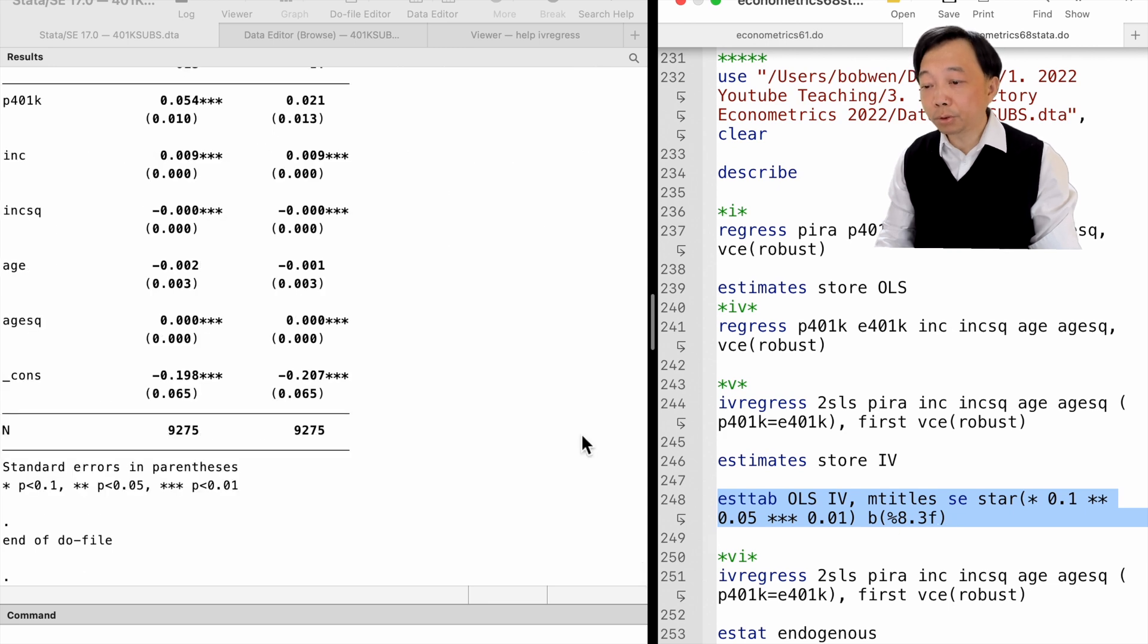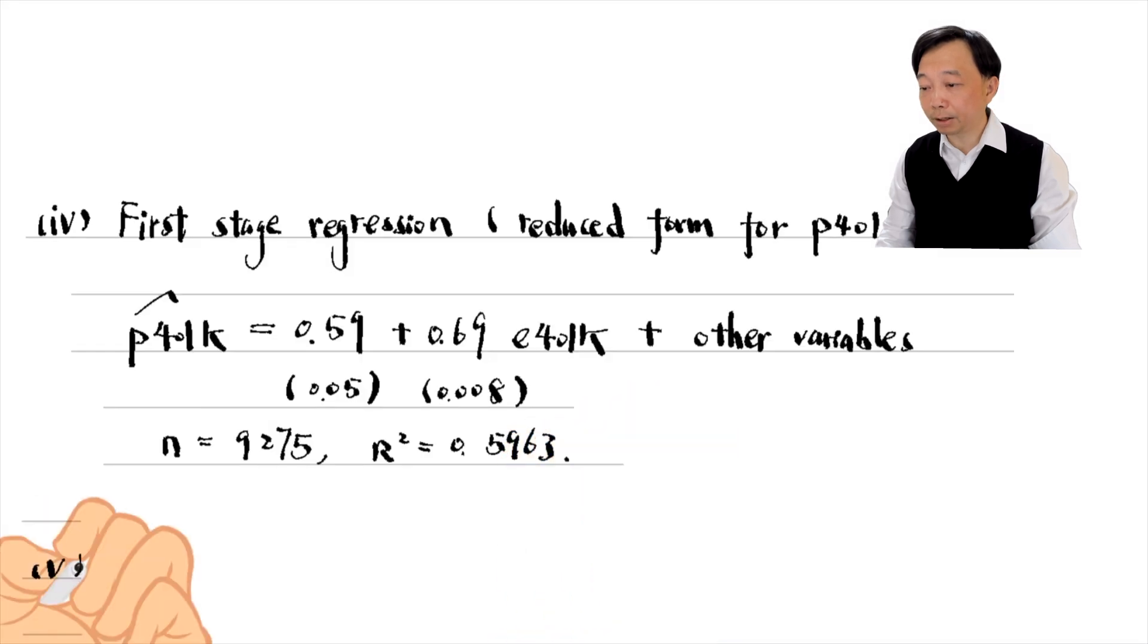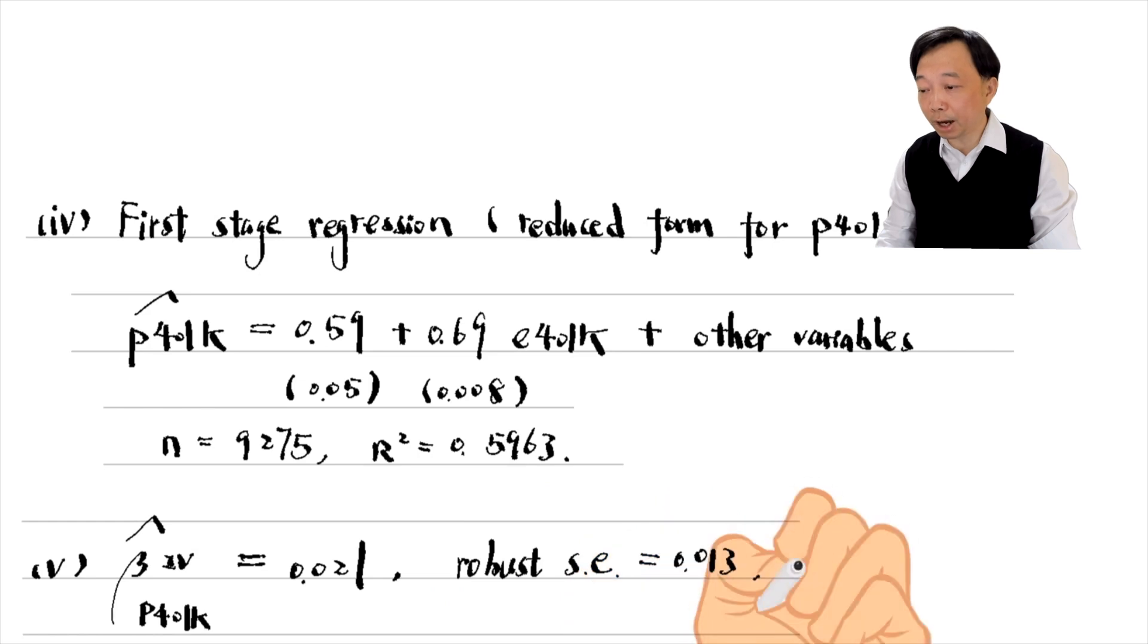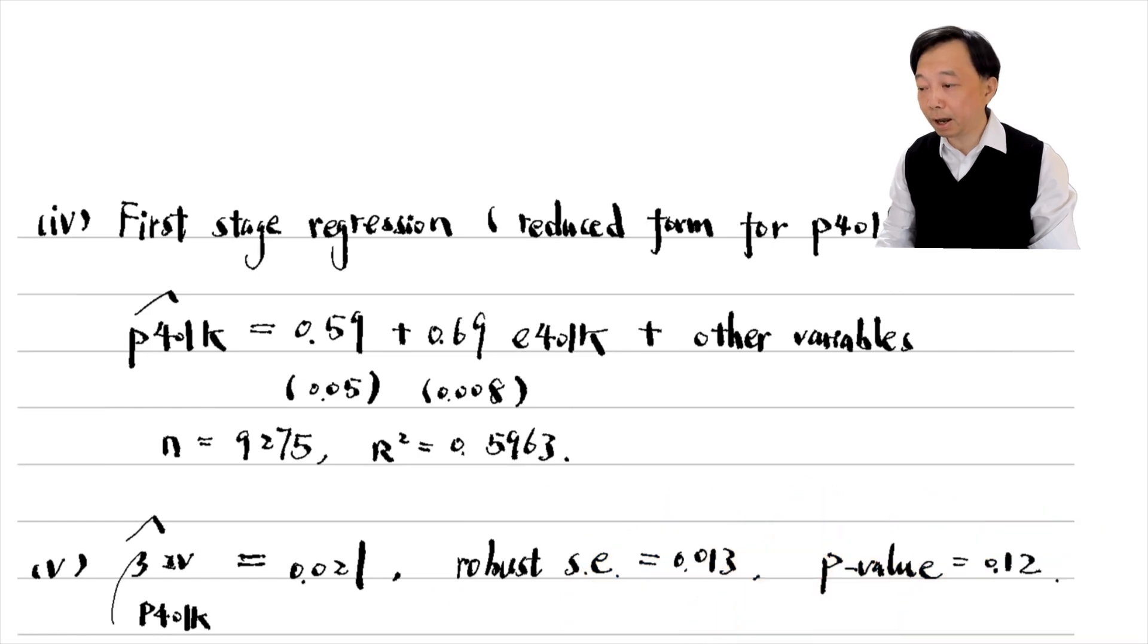The two-stage least squares estimate of beta 1 is 0.021, less than half of the OLS estimate. It is statistically insignificant at the 10% level against a two-sided alternative with a p-value of 0.12. The estimate is positive and insignificant, suggesting no trade-off between the two types of saving plans.